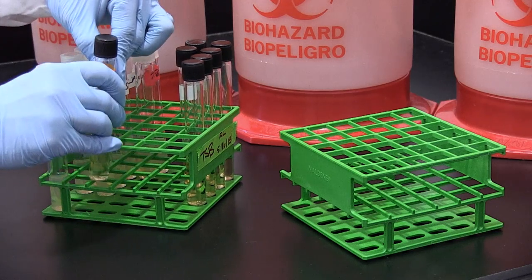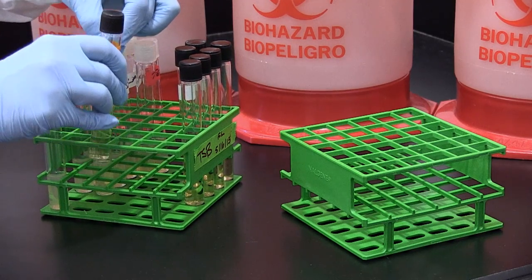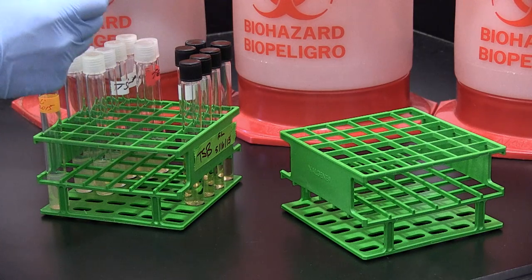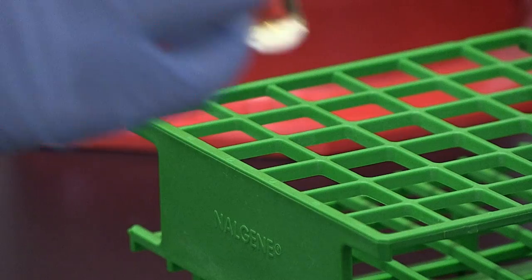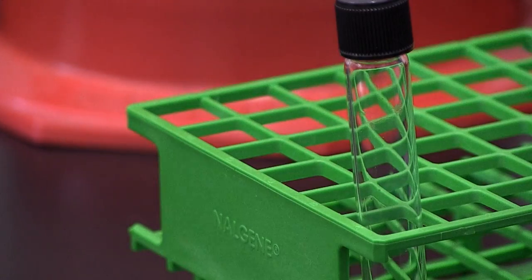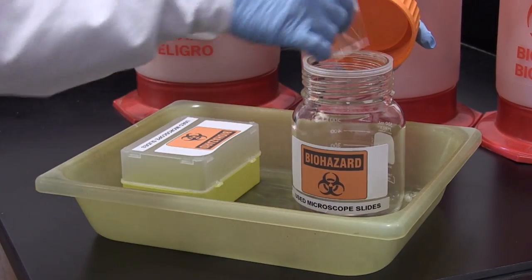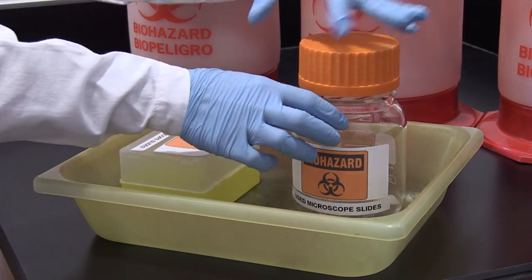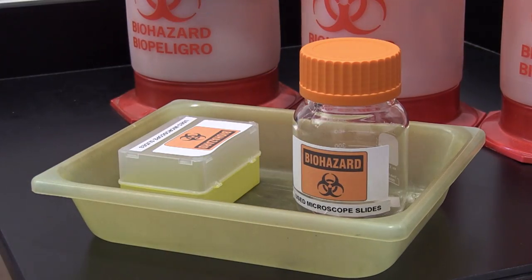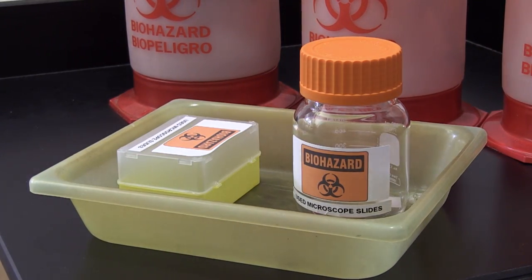Reusable supplies, such as culture test tubes and glass pipettes, should have all labels removed before being placed in a rack or container designated for autoclaving. Used microscope slides should be placed in a container for autoclaving or soaked in a disinfectant solution for a minimum of 30 minutes before being discarded.